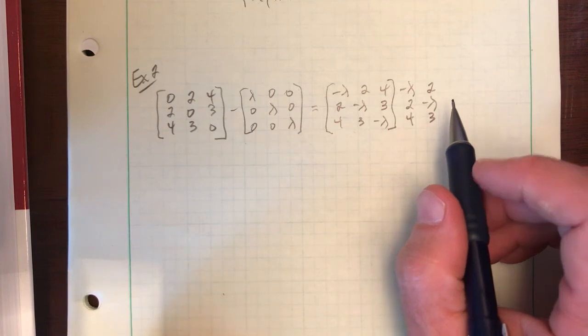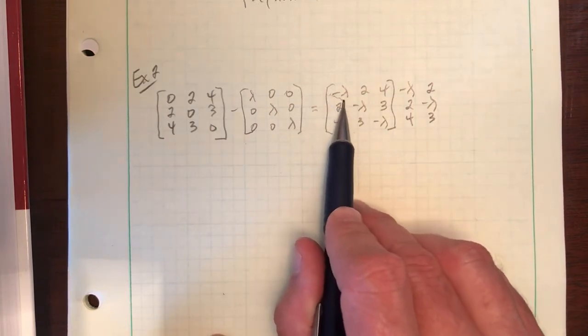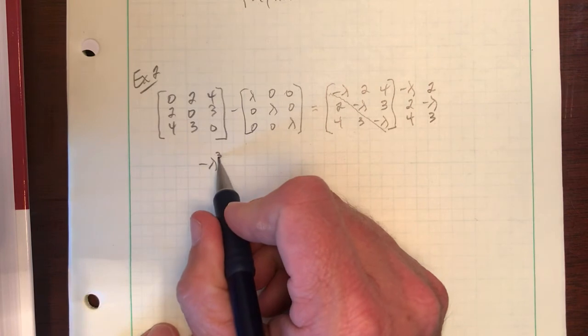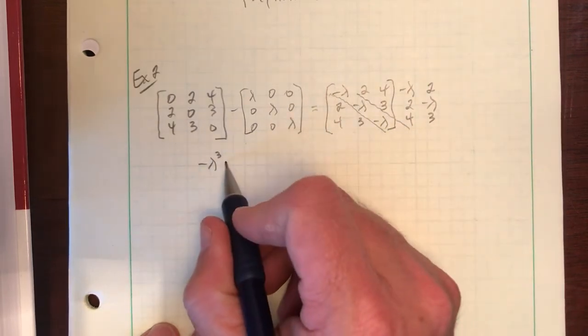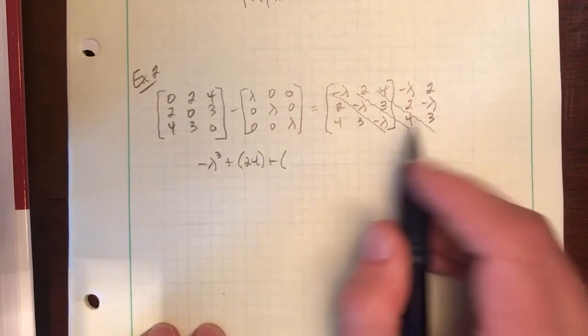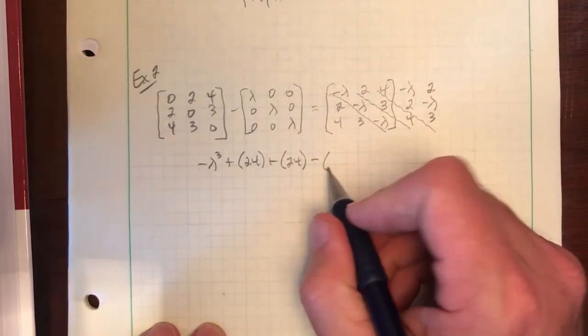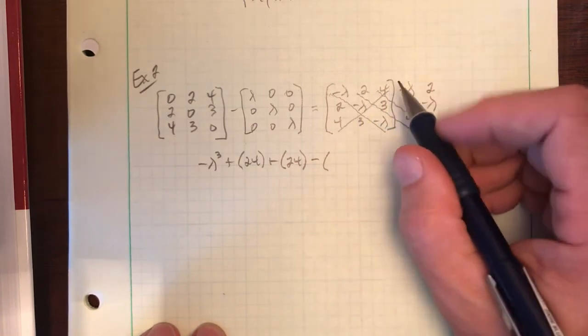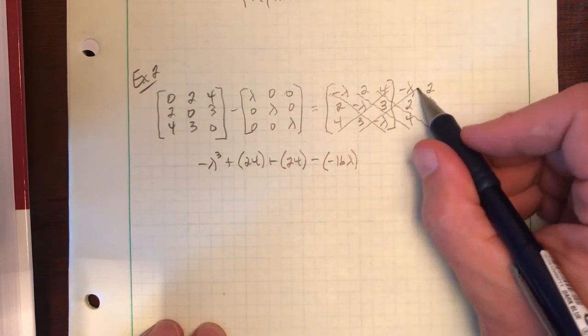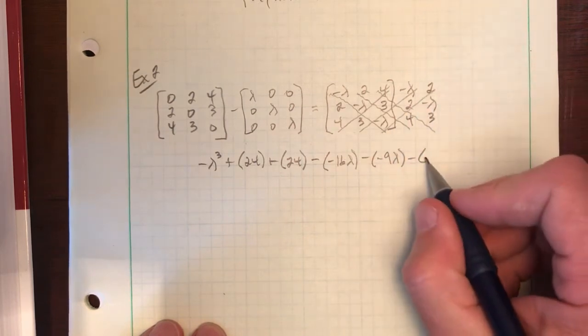Remember where you take the first two columns and you repeat them on the outside of the matrix. And then we approach this kind of like the two by two. We're going to use three diagonals going down. So starting with this first one, negative lambda times itself three times is negative lambda cubed. Next, 2 times 3 times 4, and these are plus signs in between, so that is 24 plus 4 times 2 times 3, another 24. We then switch to diagonals going up from this bottom corner, and we also switch to minus. So 4 times negative lambda times 4 is negative 16 lambda. 3 times 3 times negative lambda, so minus negative 9 lambda. And then finally, 2 times 2 times negative lambda, negative 4 lambda.